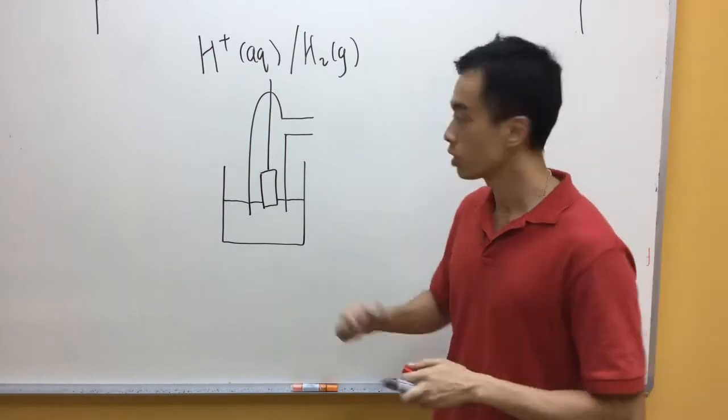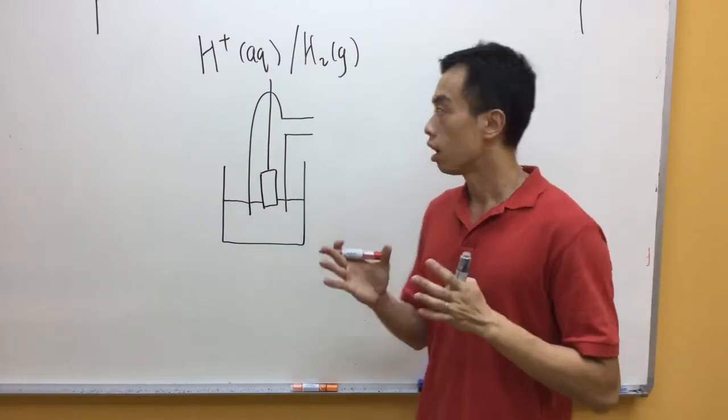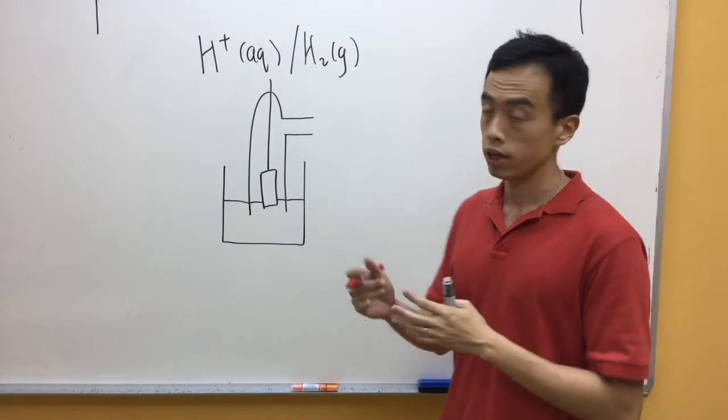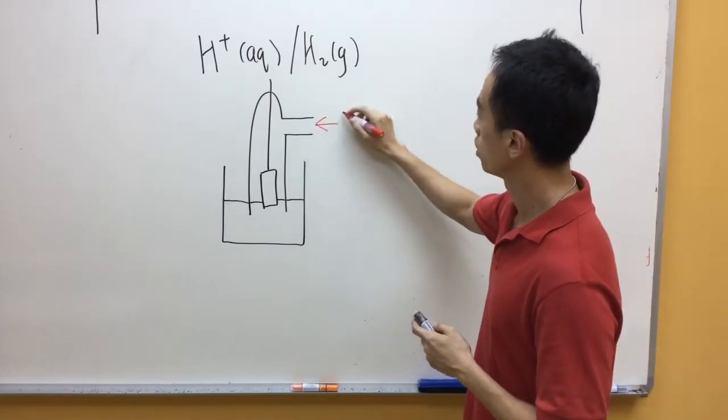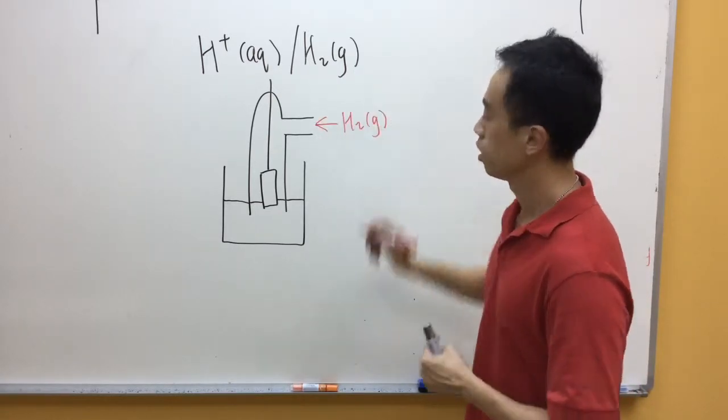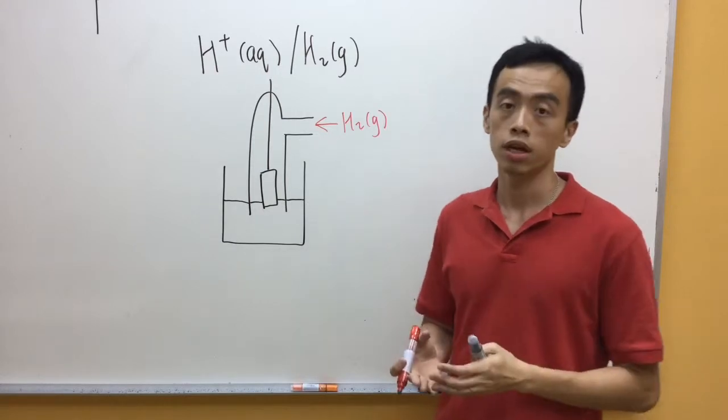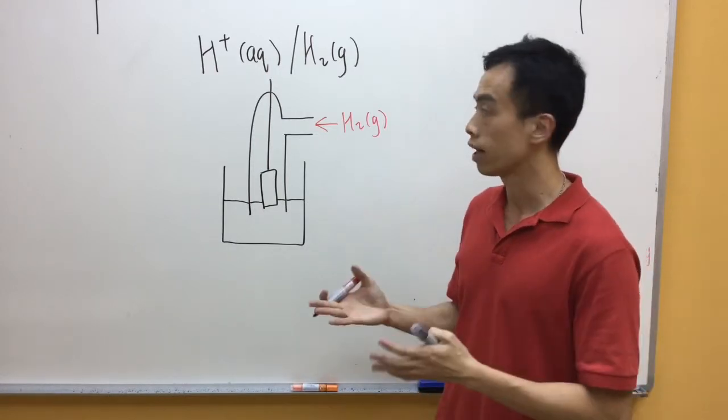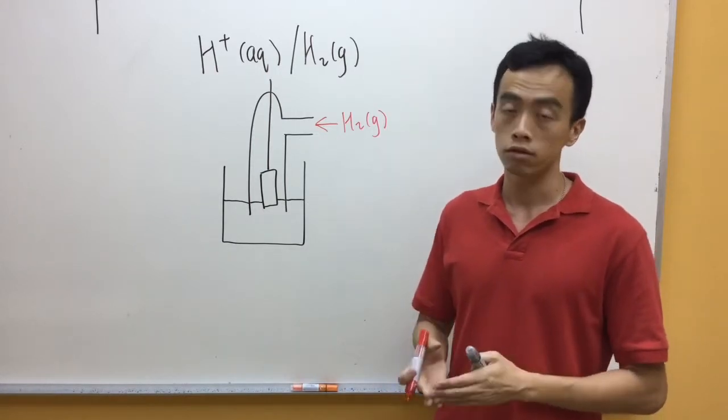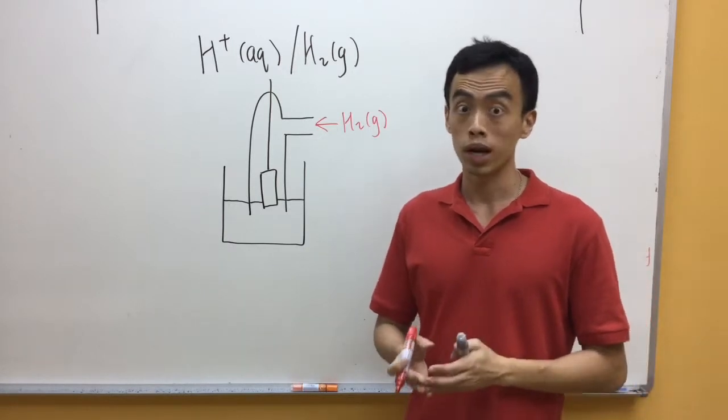Again we will draw the water level of the H-plus solution. And then now we just have to label this. Now, I have to introduce the hydrogen gas from here. Now again, we have to indicate the standard condition. For gases, it has to be at 298 Kelvin, and the pressure has to be at 1 atm.